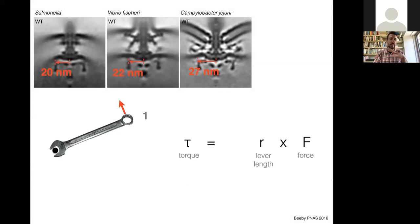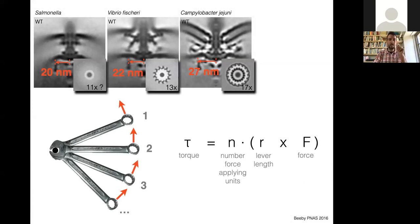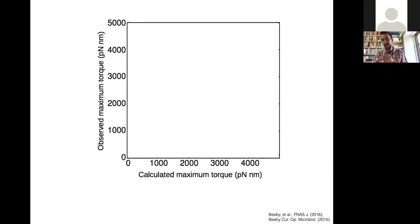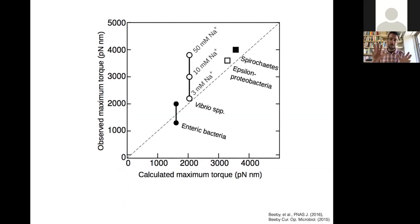Basic physics is that torque is equal to the lever length multiplied by the force applied by the stator complexes. We've got the lever length by the C-ring radius. We've got the number of force supplying units by the symmetry we see. Biophysicists have measured force. So we can take our structures and see, do our structures correspond to measured torques by biophysicists? We can plot the calculated maximum torque from our structure against the observed maximum torque from biophysicists. Bottom line is our structures magnificently explain these differences in torque in different species.